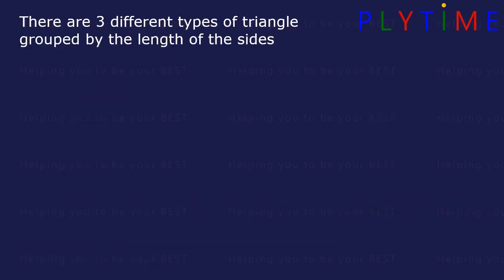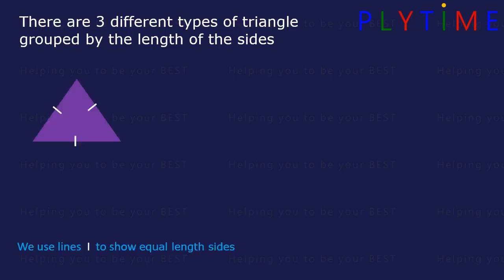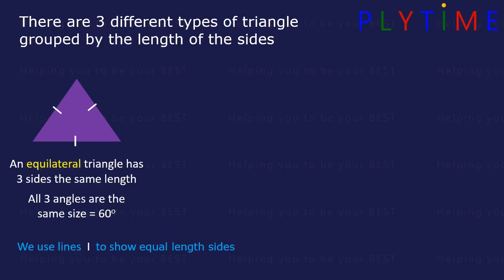There are three different types of triangles grouped by the length of the sides. We use marks to show that they are equal length sides. This is an equilateral triangle and all three sides are the same length. All three angles are also the same size — they're all 60 degrees.